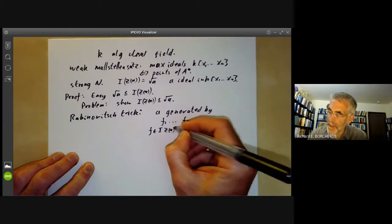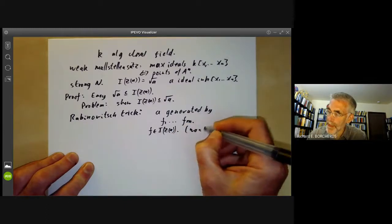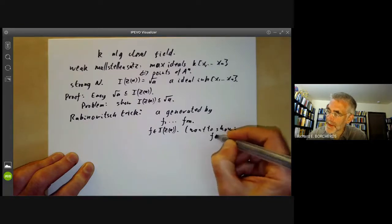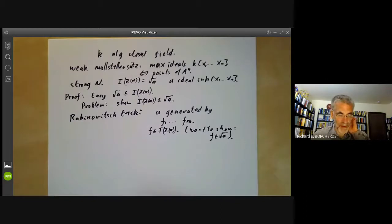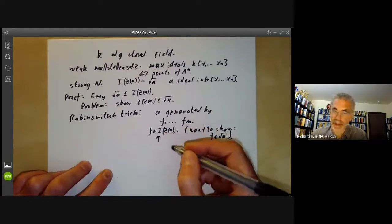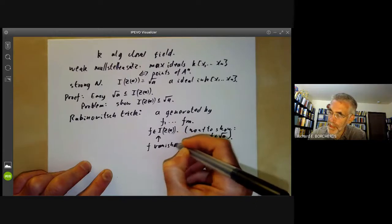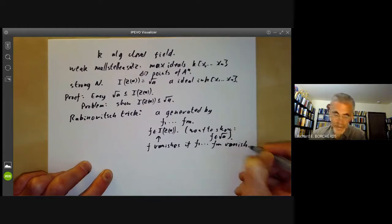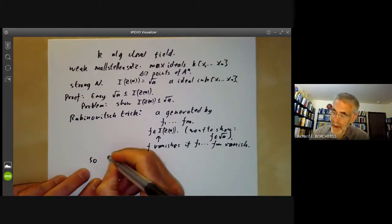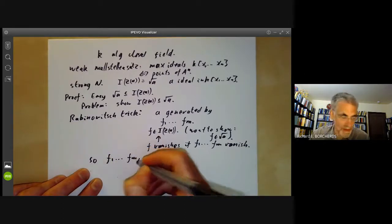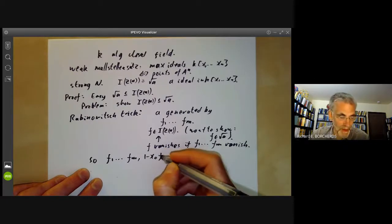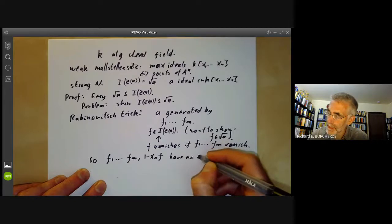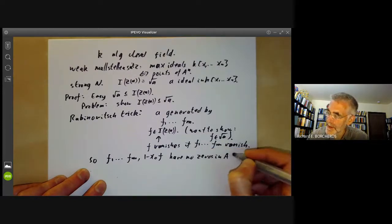So we want to show that f is in the radical of a. Well, this means that f vanishes if f1 up to fm vanish. So f1 up to fm and 1 minus x0·f have no zeros in A^(n+1).